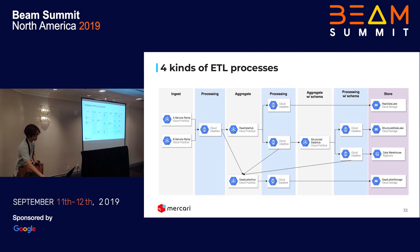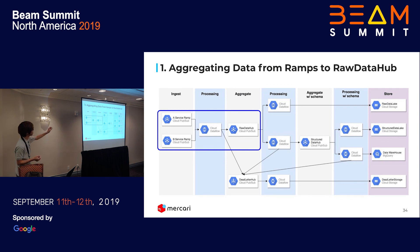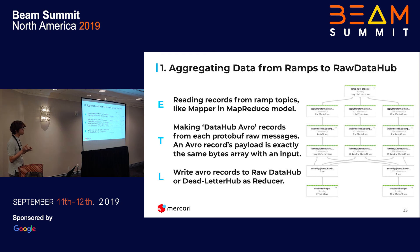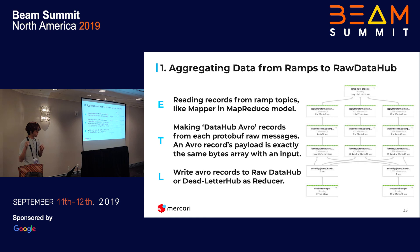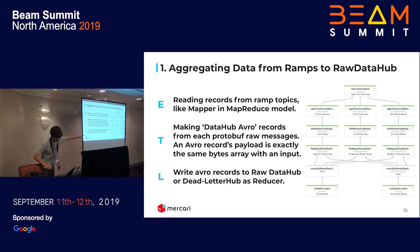I will introduce four kinds of ETL processing. First, we aggregate data from each ramp to the raw data hub — it is a map-reduce job. We read records from every ramp topic as the map phase, and the transform phase creates data hub Avro records from each original protocol record. We don't change the payload; we just handle it as a byte array. Then we write Avro records to the raw data hub.